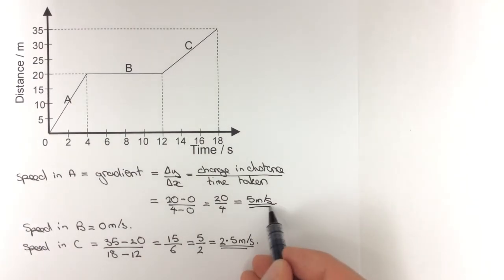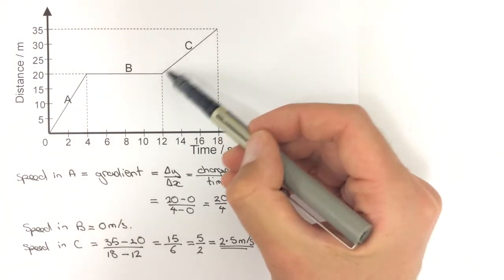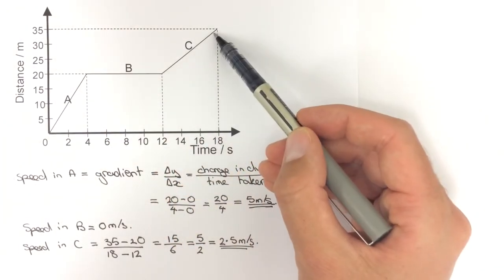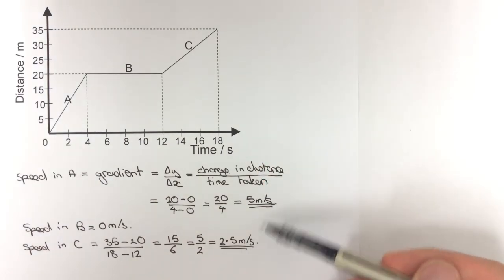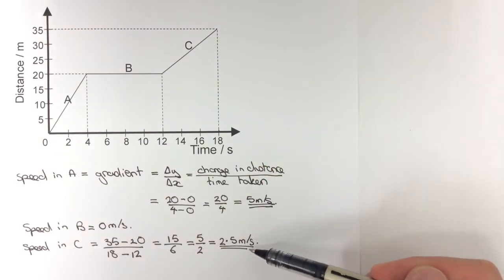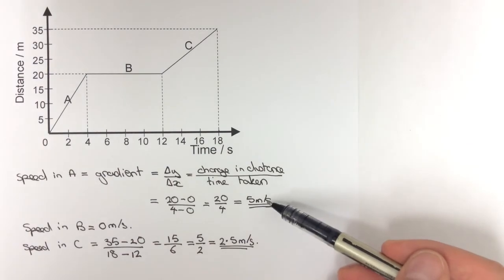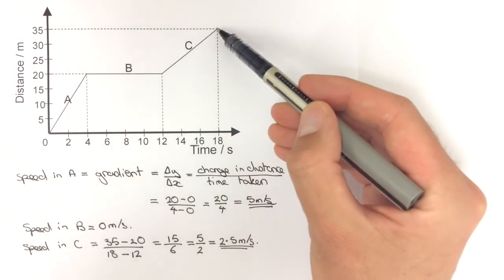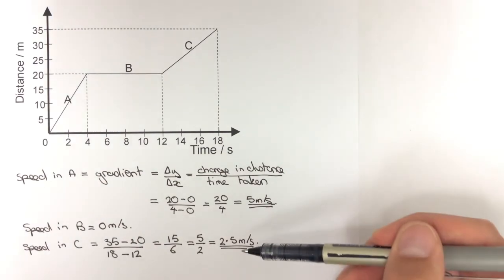I always like to do a sanity check at the end. Is that less steep than my starting section? Yes, it is less steep, and I've calculated a lower speed, so that seems reasonable. This is a steeper section which is faster; this is a shallower or less steep section which is slower.